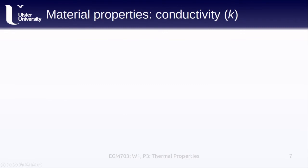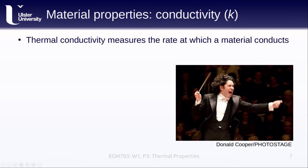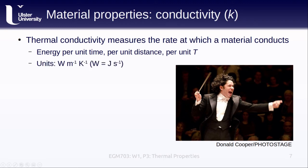The next material property that we will cover is the thermal conductivity, usually denoted with a lowercase k. The thermal conductivity measures the rate at which a material conducts. For example, the conductor shown here, Gustavo de Dommel, has a very high conductivity. He's conducting very quickly. Another way to think about thermal conductivity is that this is the energy transferred through an object per unit time, so how long it takes, per unit distance, which is how long the energy has to go to be transferred, per unit of temperature. In other words, the units of conductivity are watts, or joules per second, per meter per kelvin.